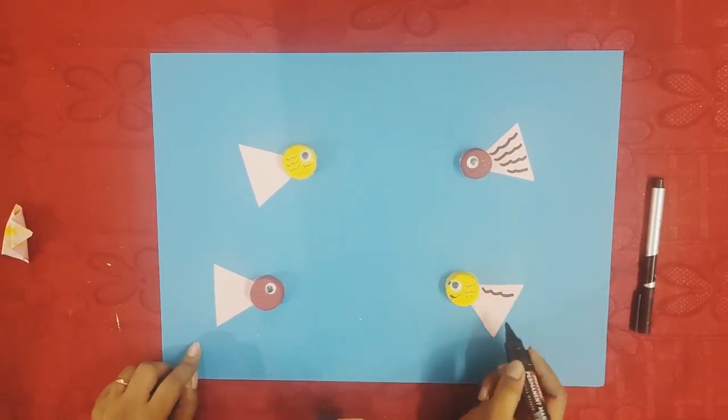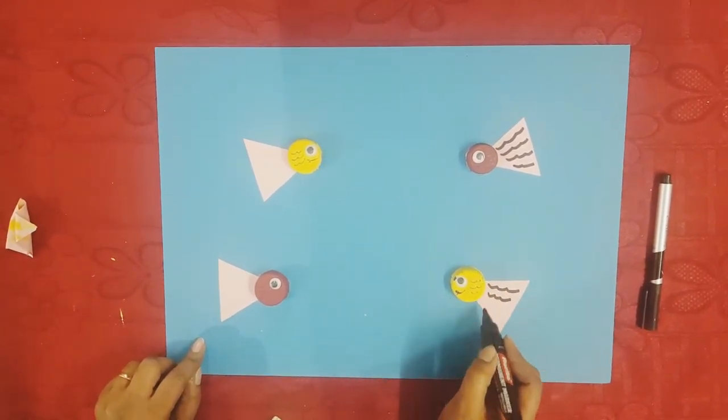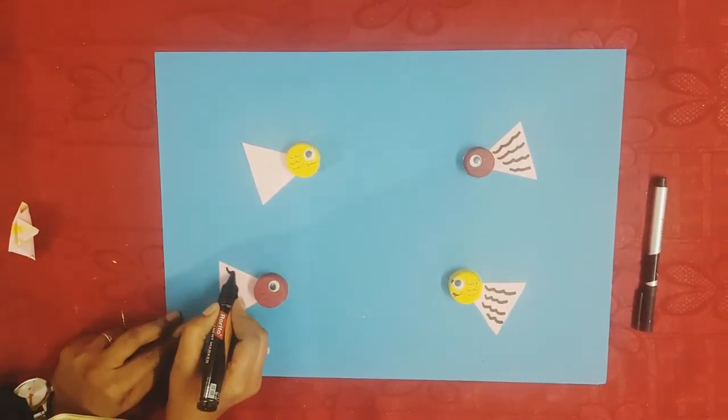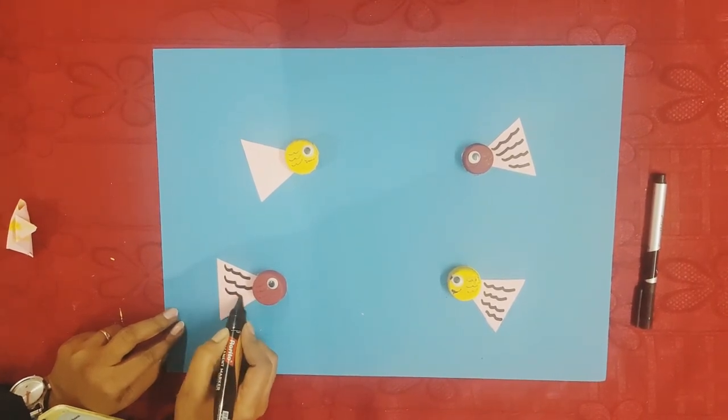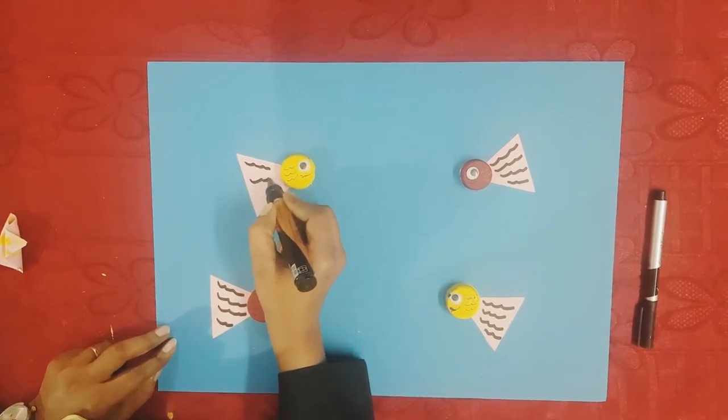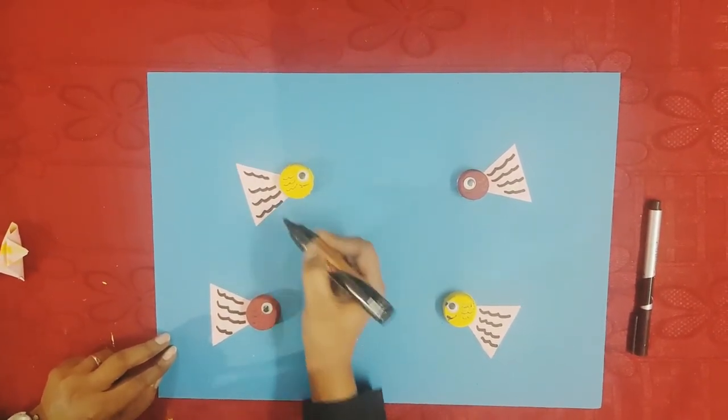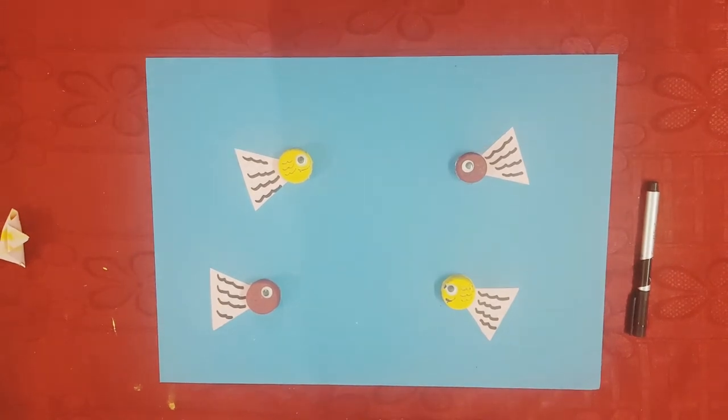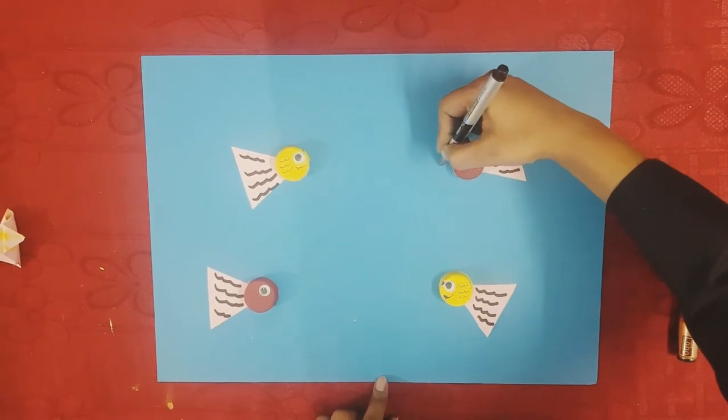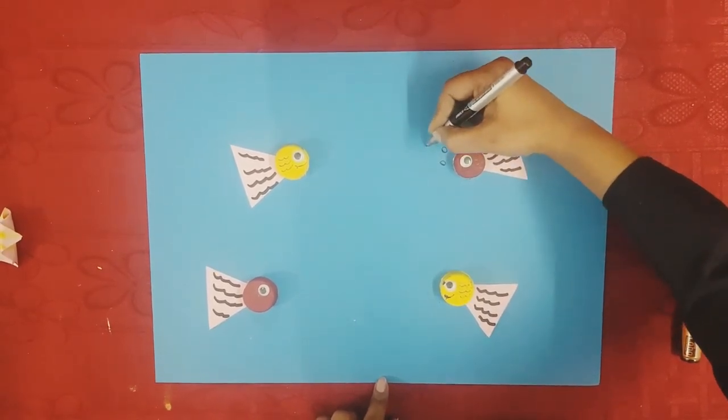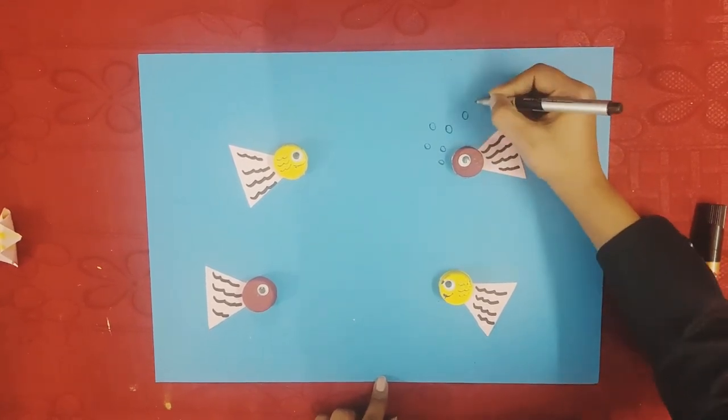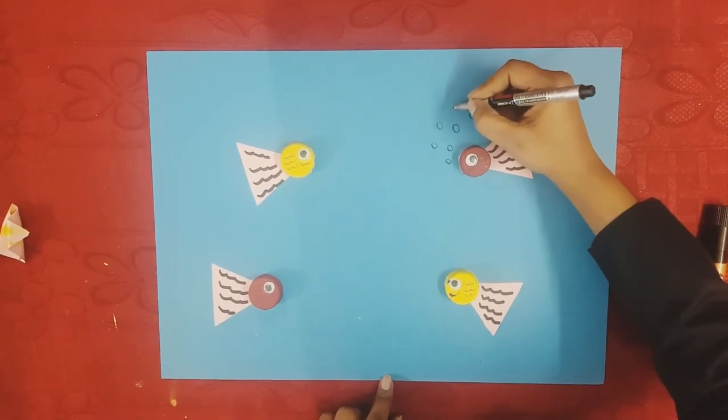Next we are going to make the scales on the fins. With the help of the permanent black marker we are going to draw the bubbles coming out from the mouth of the fish like this. We are using this black thin permanent marker.